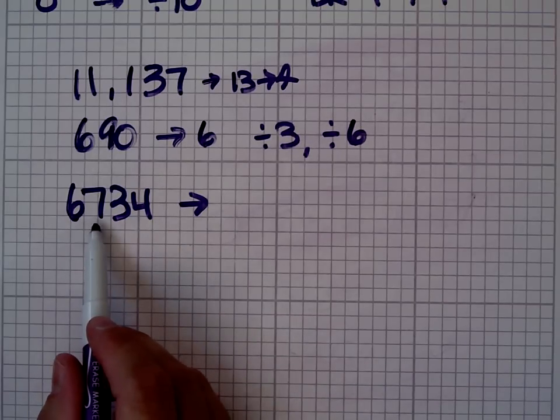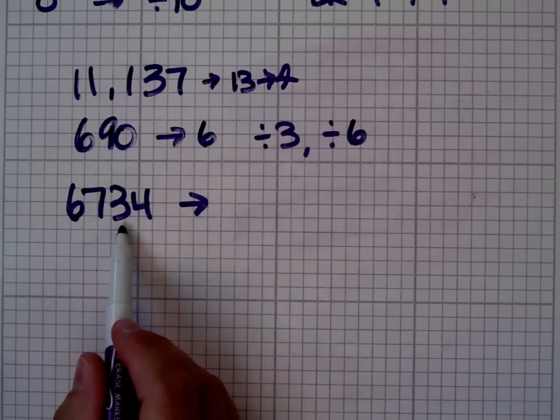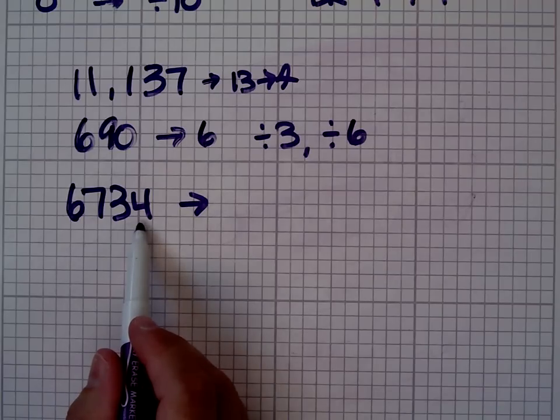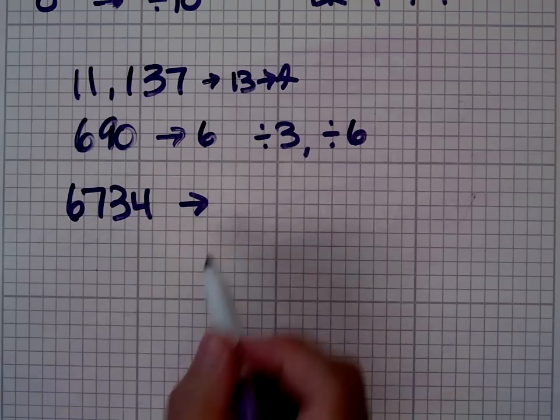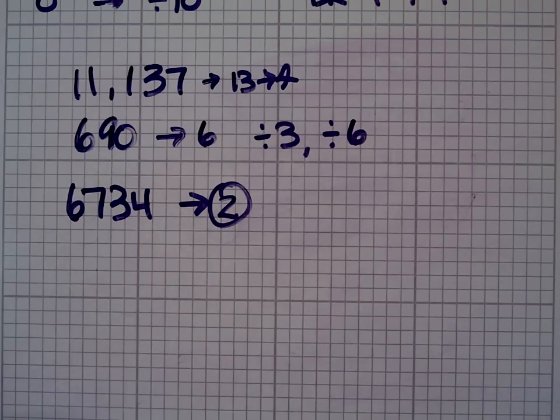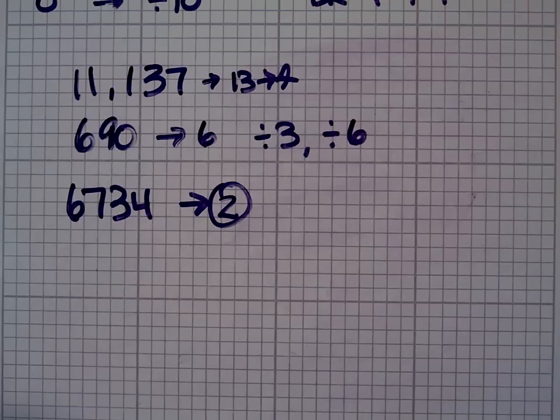6 plus 7 is 13. 13 plus 3 is 16. 16 plus 4 is 20. 2 plus 0 is 2, so its digital root is 2, which means it is not divisible by 3, 6, or 9.